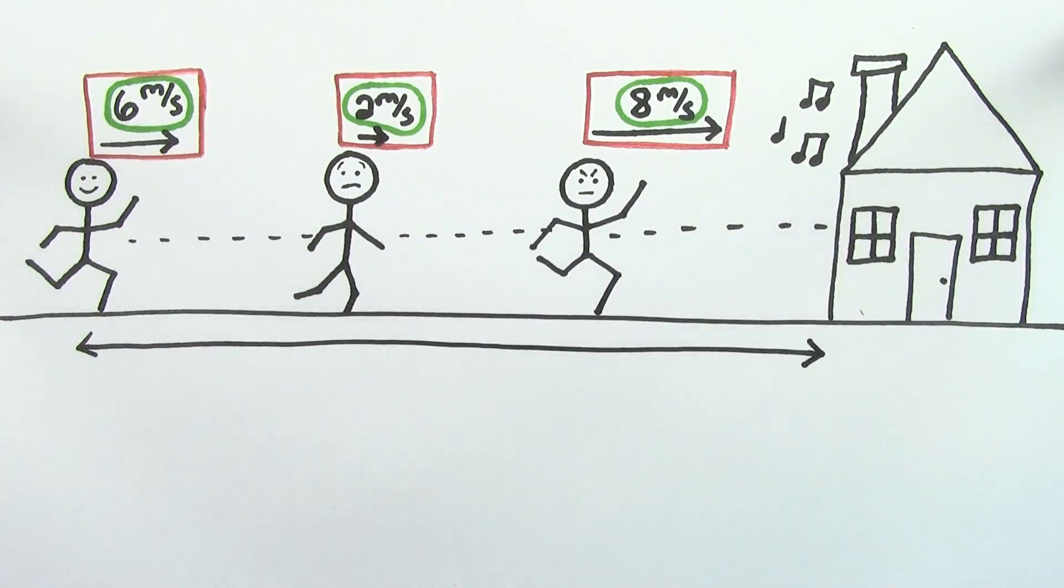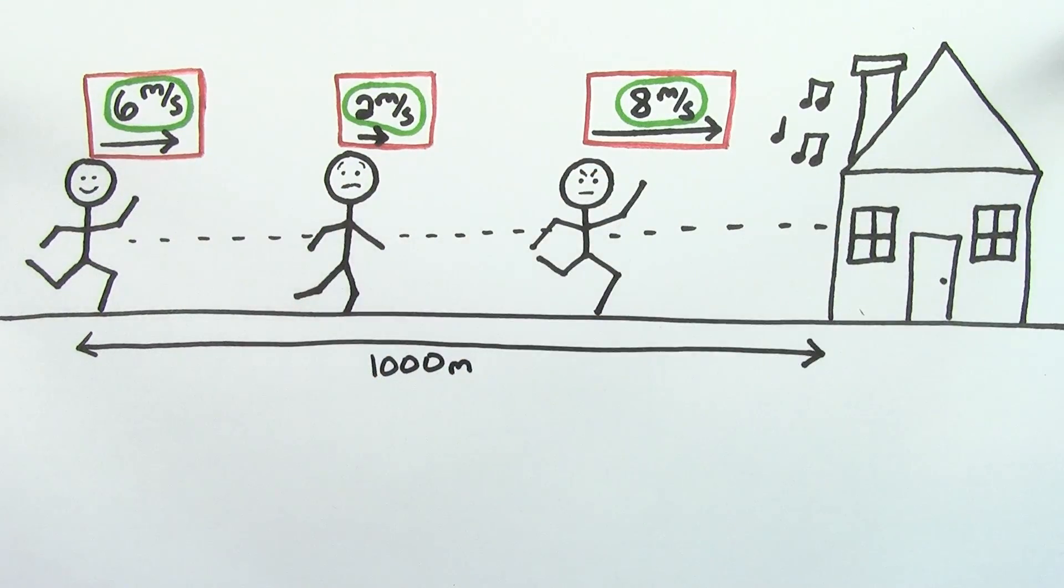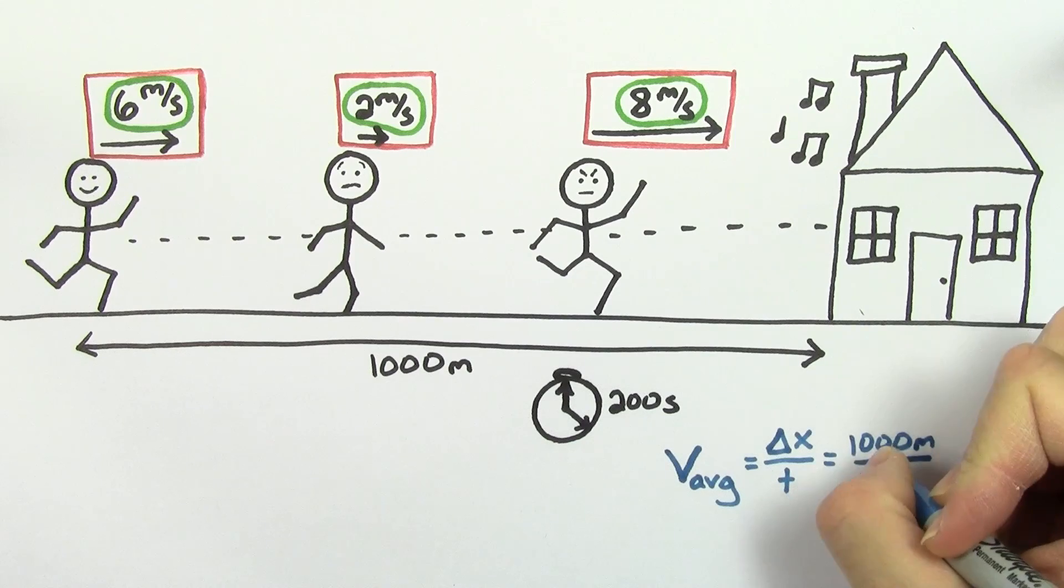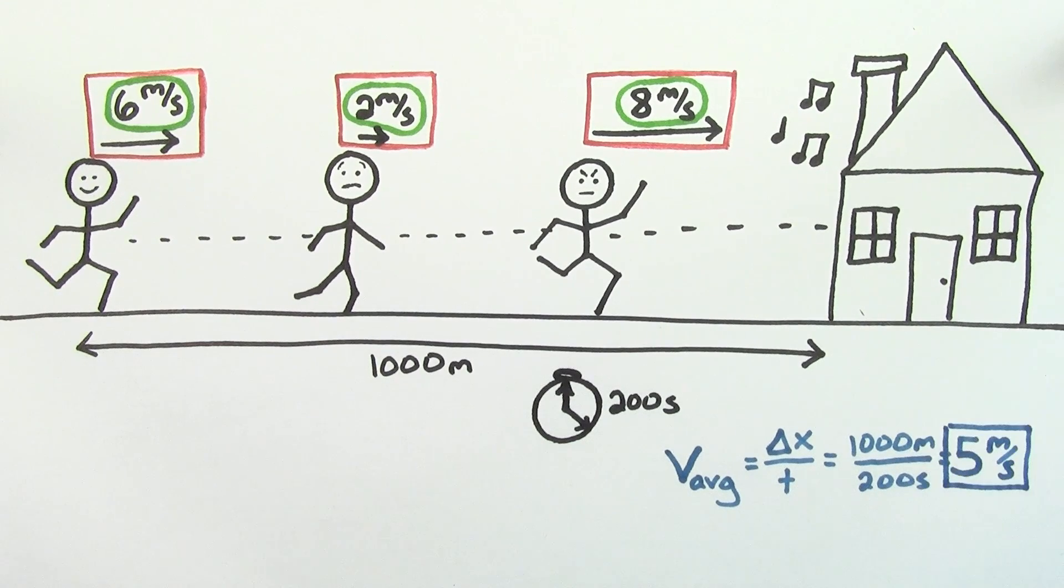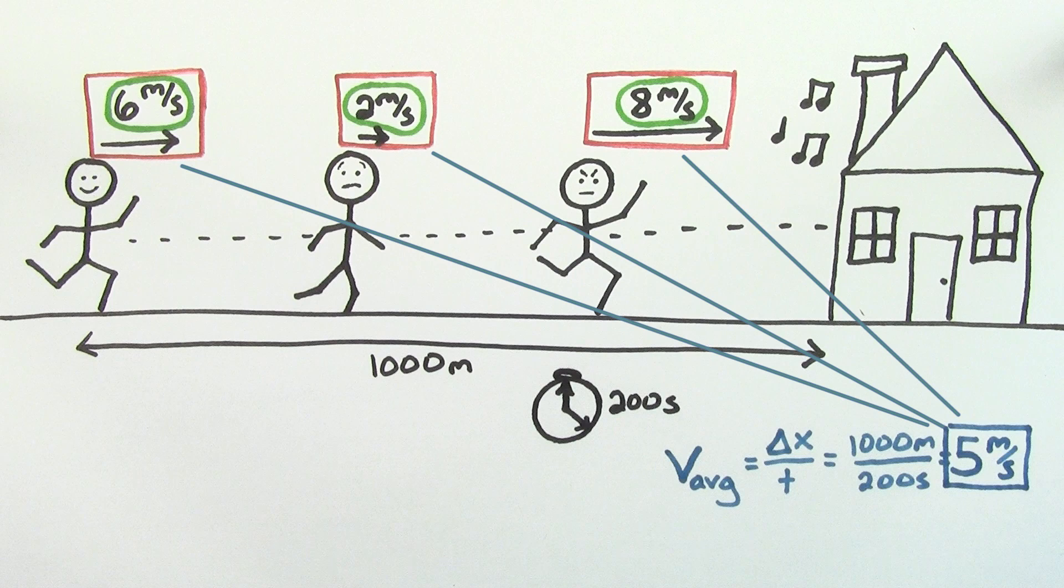Note that this is different from the average velocity. If your home was a thousand meters away from school, and it took you a total of 200 seconds to get there, your average velocity would be 5 meters per second, which doesn't necessarily equal the instantaneous velocities at particular points on your trip.